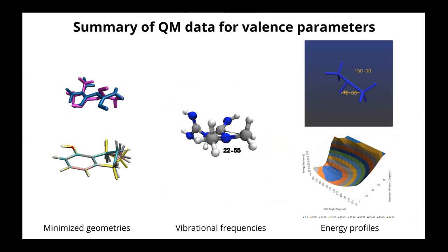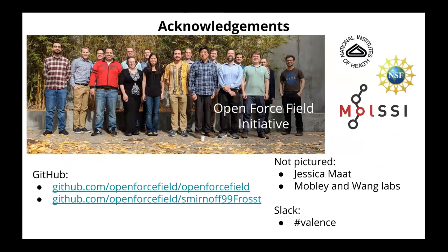To summarize: we plan to use minimized geometries, vibrational frequencies, energy profiles, and potentially also Hessians in fitting these. We can already refit selected parameters without any headache using ForceBalance directly and doing things locally, but we're building out infrastructure to make this large-scale, automated, reusable, and reproducible. There's quite a bit of interesting science to do relating to impropers. Acknowledgements: Jessica did some of this work, and Jordan is an undergrad volunteer in the lab who's done the millions-of-molecules minimization project. The Slack valence channel is available for further discussion.